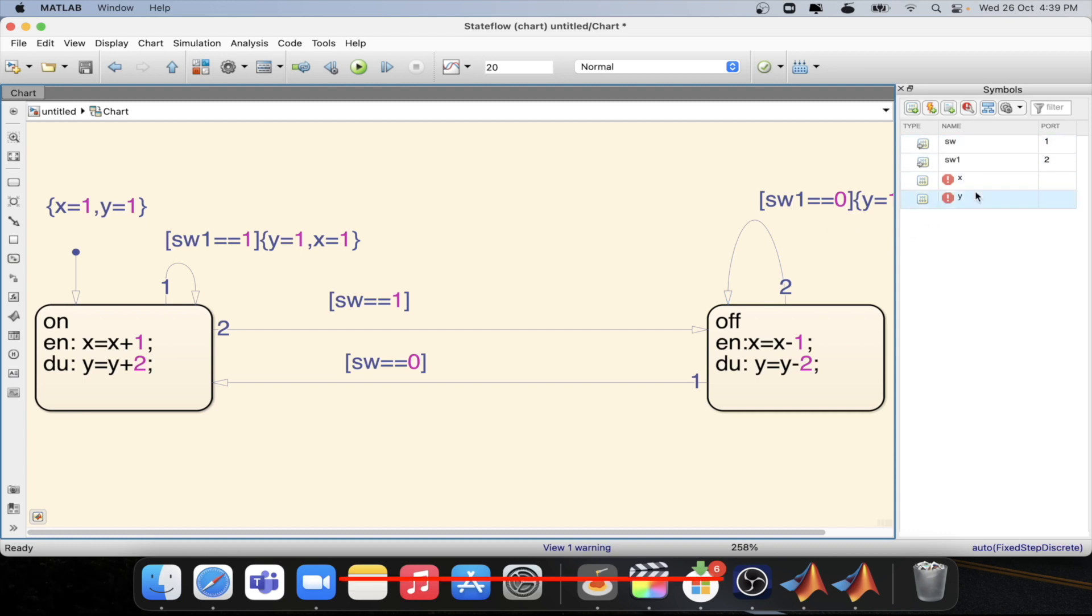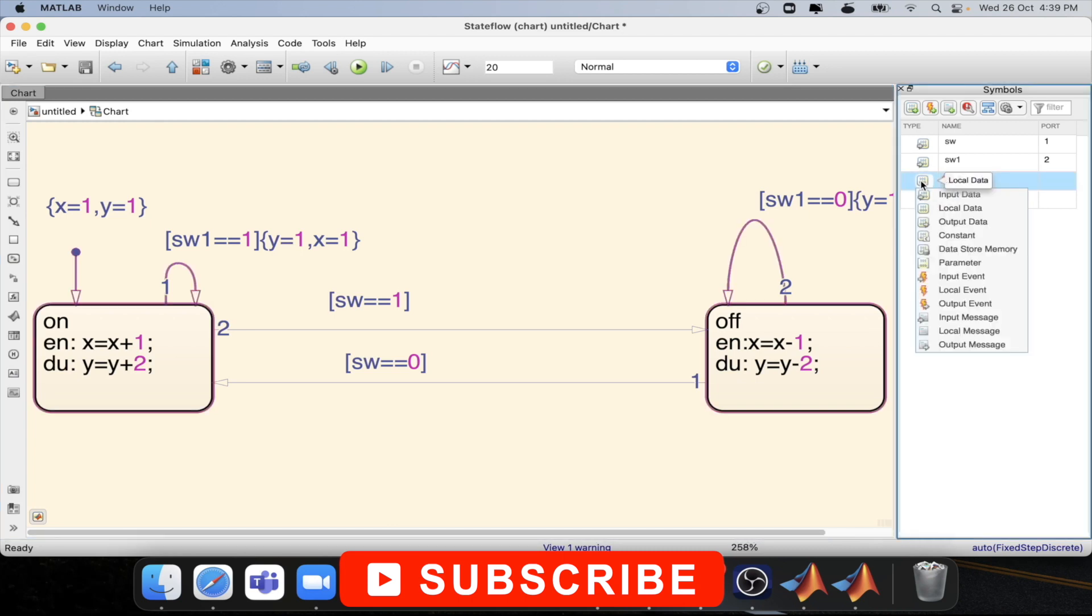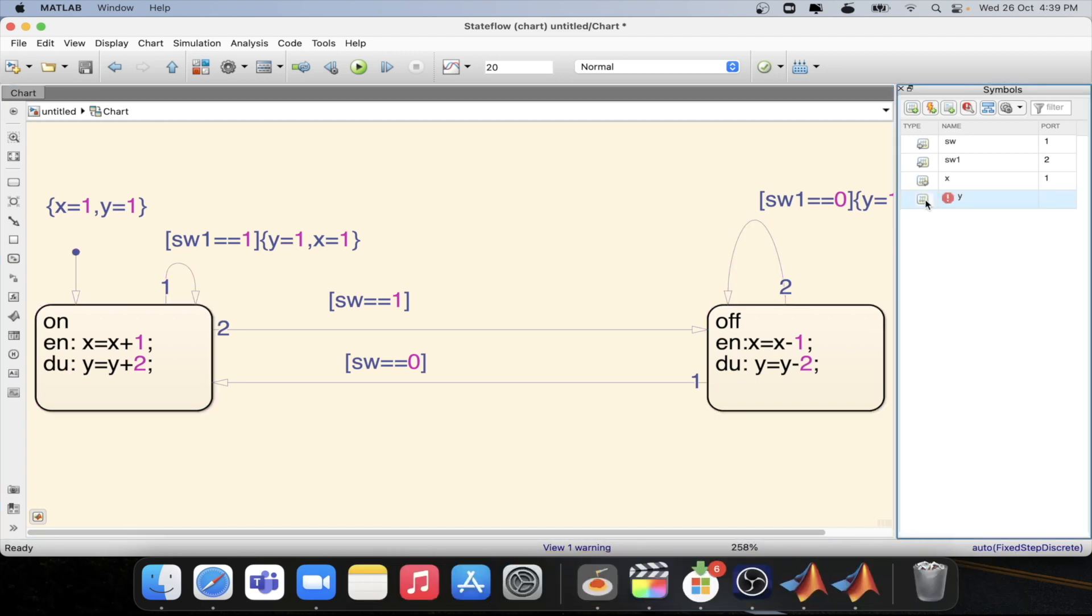Now we have the symbol wizard available over here which is asking what type of data x is. Then it will be an output data. What type of data y is. Then also it is an output data. Or it could be a local data.